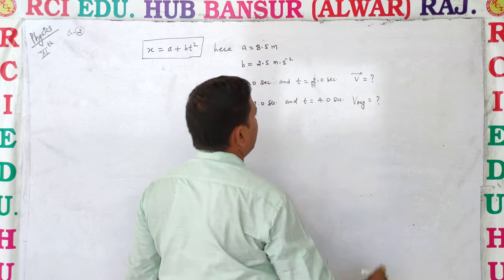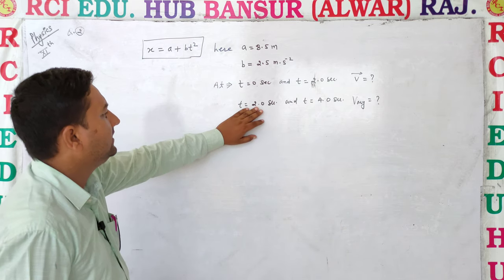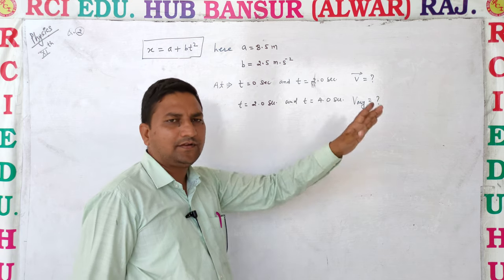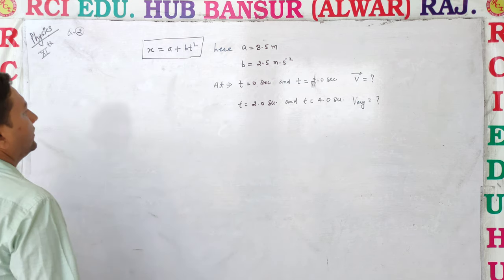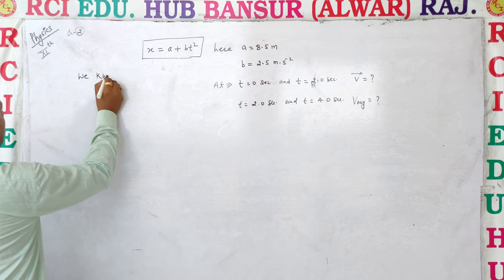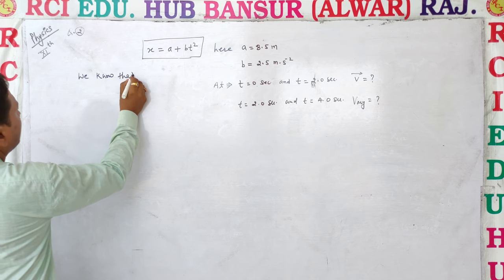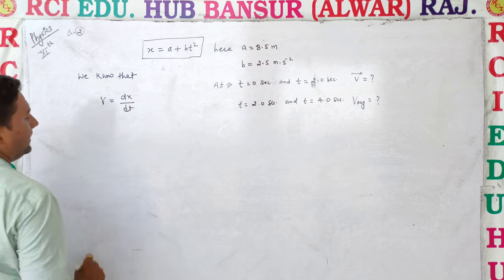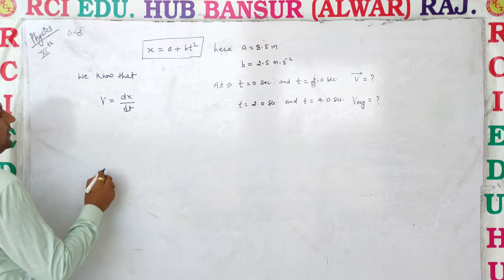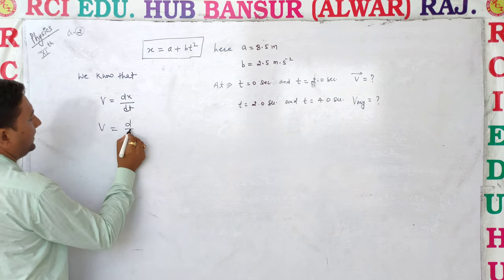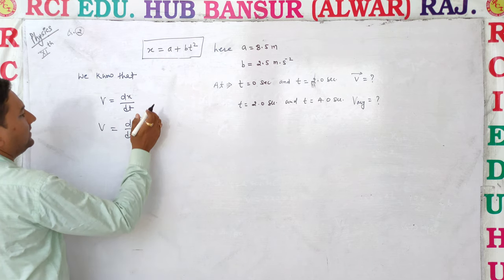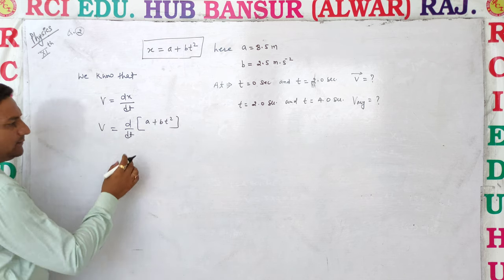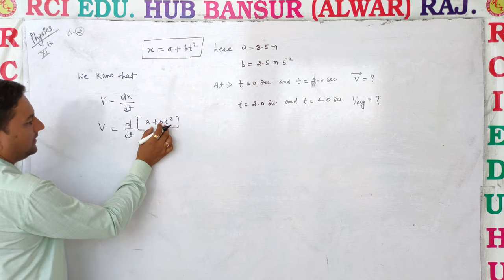After calculating the velocity, we also consider average velocity between t equal to 2.0 seconds and t equal to 4 seconds. We know that the formula for velocity is v is equal to dx by dt. So v is equal to d/dt of x, where x is a plus bt squared — differentiation with respect to t.